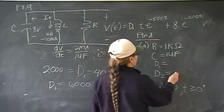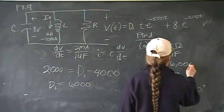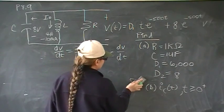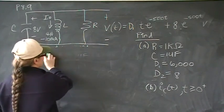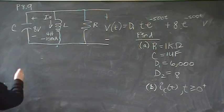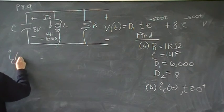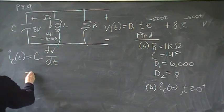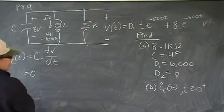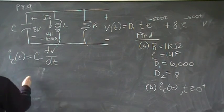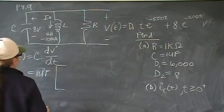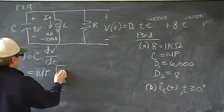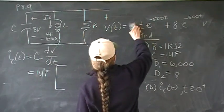So D2 is 8, D1 is 6,000. Now, on to part B. In part B, we have to find I sub C. And here, we only have one choice. That's going to be I sub C is going to be C dV/dt. So C, we know it's 1 micro. Multiply that by 6,000. Take the derivative of that. We need to replace that with 6K.